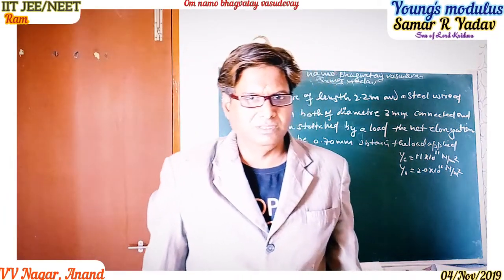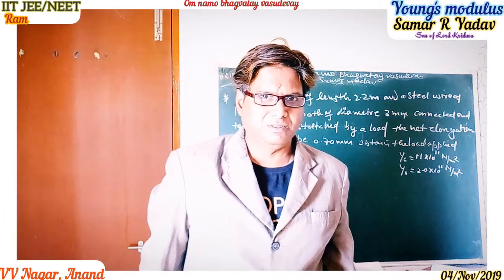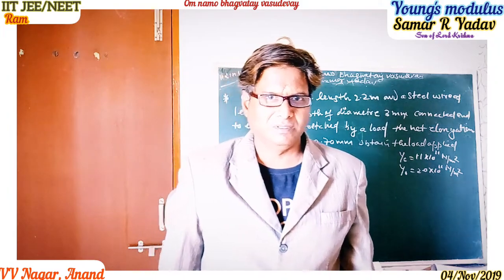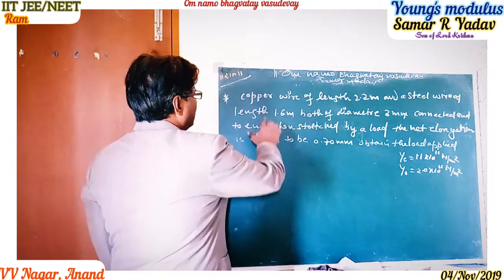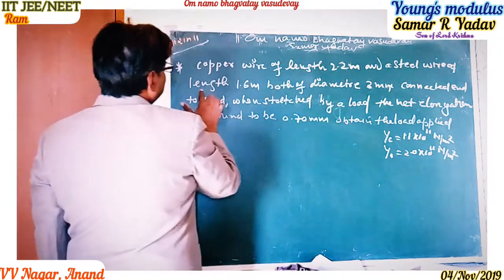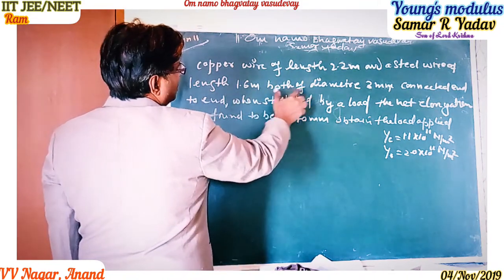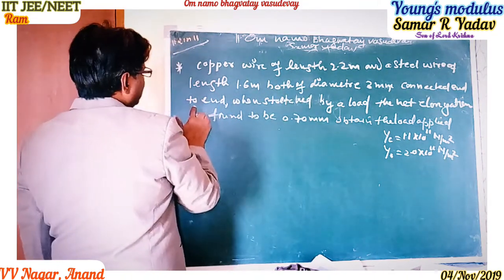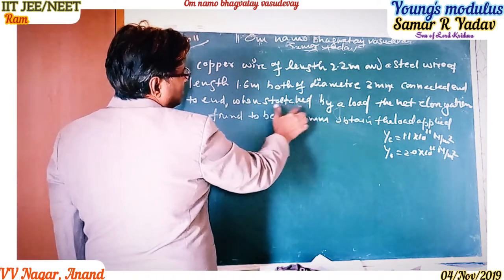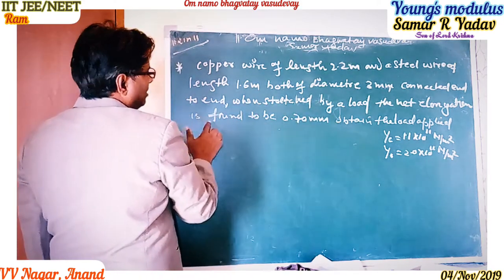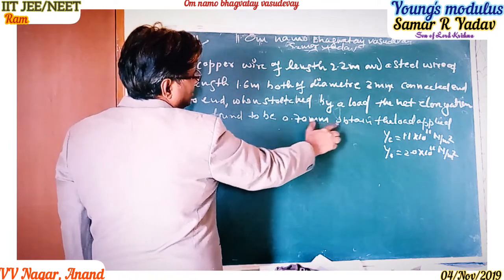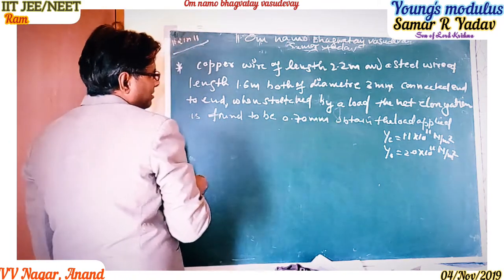Today in physics, we look at a numerical based on properties of elastic substances. A copper wire of length 2.2 meters and a steel wire of length 1.6 meters, both of diameter 3 mm, are connected end to end. When stretched by a load, the net elongation is found to be 0.7 mm. We need to obtain the load applied.